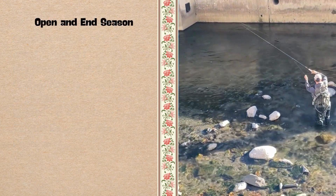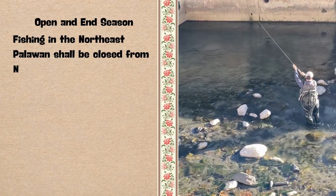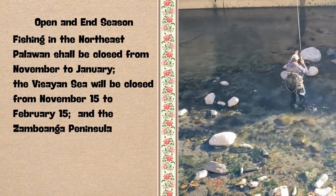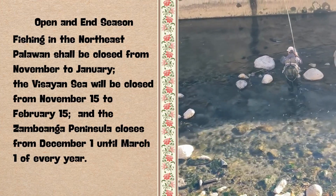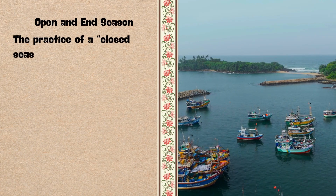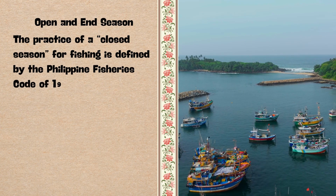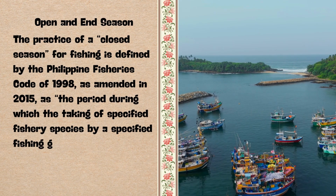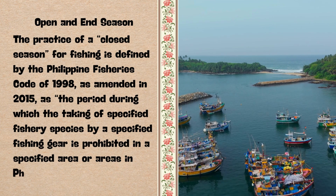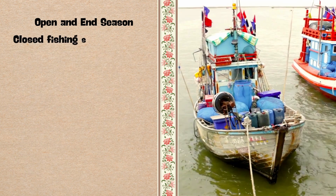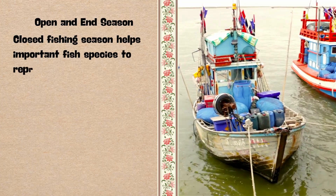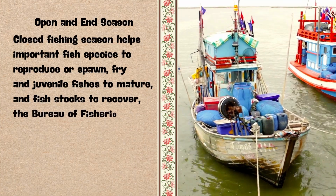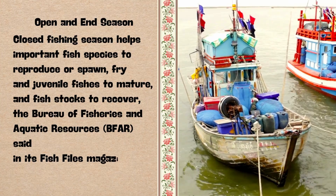For the open and closed season: fishing in northeast Palawan shall be closed from November to January; the Visayan Sea will be closed from November 15 to February 15; and the Zamboanga Peninsula closes from December 1 until March 1 of every year. The practice of a closed season is defined by the Philippine Fisheries Code of 1998, as amended in 2015, as the period during which the taking of specified fishery species by a specified fishing gear is prohibited in a specified area in Philippine waters. Closed fishing season helps important fish species to reproduce or spawn, fry and juvenile fishes to mature, and fish stocks to recover, according to the Bureau of Fisheries and Aquatic Resources (BFAR) in its Fish Files magazine in 2021.